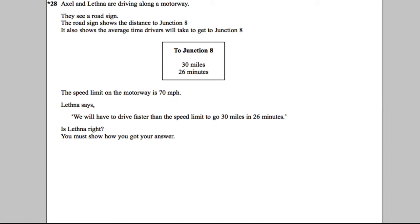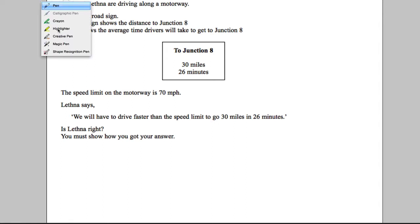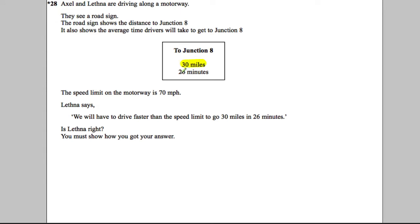Axel and Lefner are driving along a motorway and see a road sign showing the distance to Junction 8 is 30 miles, with an average travel time of 26 minutes. The speed limit on the motorway is 70 miles per hour. Lefner says they will have to drive faster than the speed limit to go 30 miles in 26 minutes. Is Lefner right?